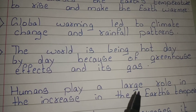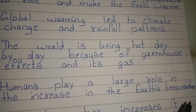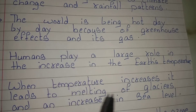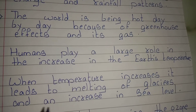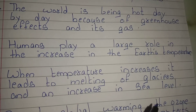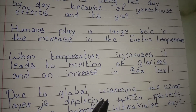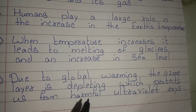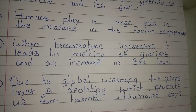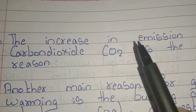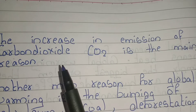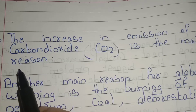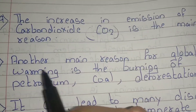Humans play a large role in the increase in the earth's temperature. When temperature increases, it leads to melting of glaciers and an increase in sea level. Due to global warming, the ozone layer is depleting, which protects us from harmful ultraviolet rays.